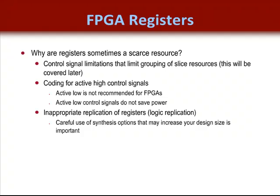Meeting your device utilization and timing goals can be more difficult if you are not careful about coding properly for the register's control signal limitations. We will get into control signal management in just a moment. Another topic we will discuss is the use of active low control signals. We were all taught at the university to use active low for power savings, but that does not apply to FPGAs, or at least the newest FPGAs. Simply put, active high control signals not only don't save power, but they end up using extra logic. We're not going to spend any time discussing synthesis options in this module, but careful use of your synthesis options can unnecessarily increase the size of your design. We recommend careful use of the logic replication option, and careful consideration of allowing your synthesis tool to modify your design results. Proper synthesis tool usage is discussed in our Designing for Performance course.